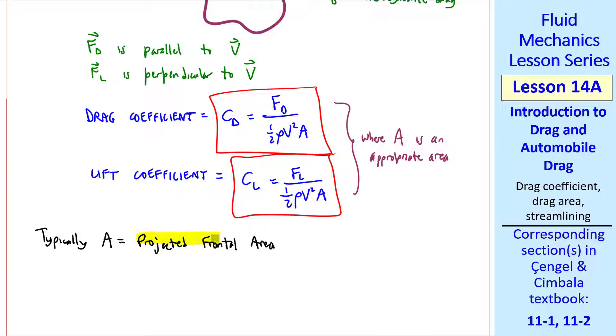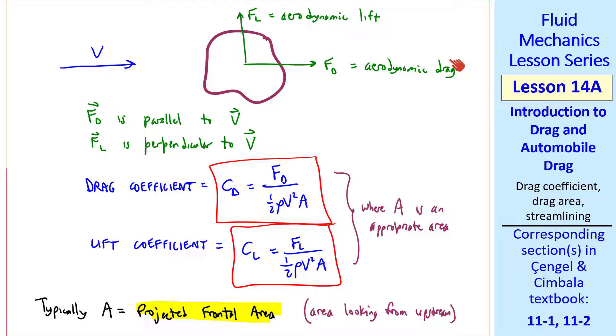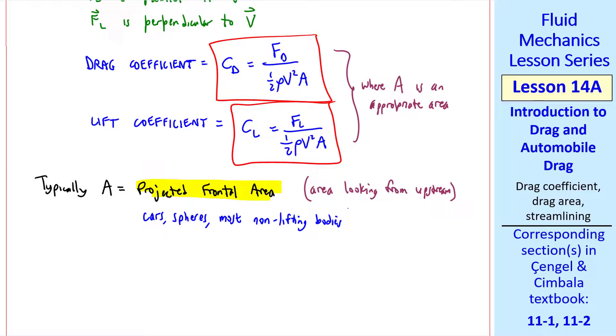Typically, A is the projected frontal area, which is the area looking from upstream. Imagine looking at this object with a bright light behind it. The area that you see as a darkened area or shadow from upstream is the projected frontal area. This is the appropriate area used for cars, spheres, and most other non-lifting bodies.